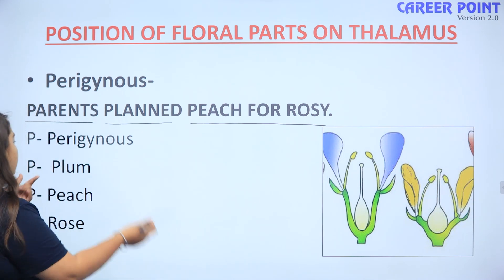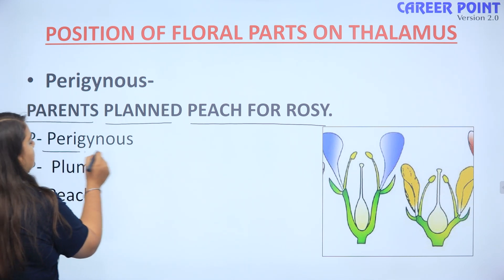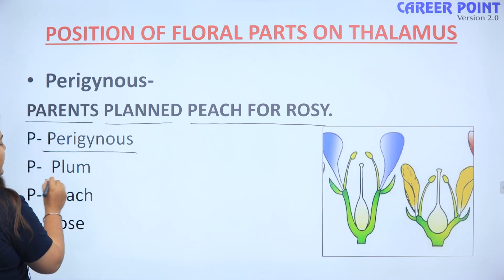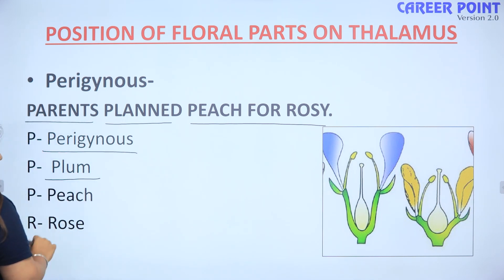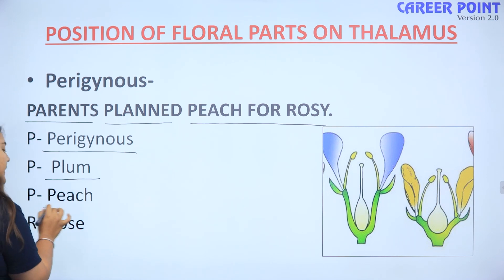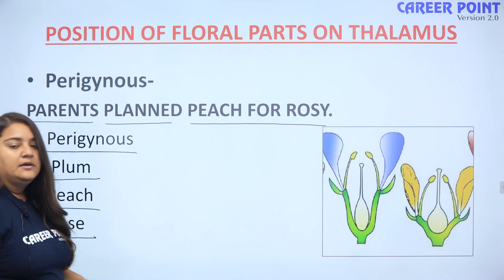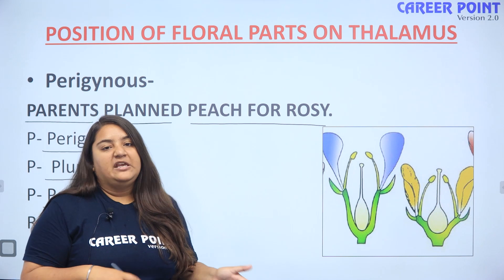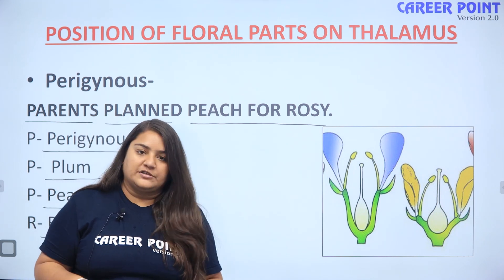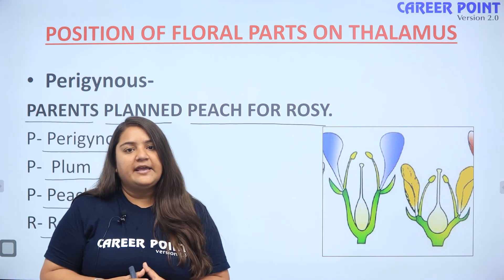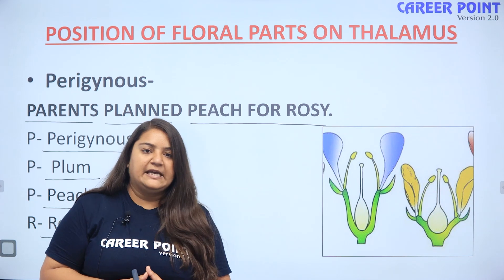P se kya ho gaya? Perigynous. Next P se plum. Us ke baad P se peach. And R se rose. So 'Parents plant peach for rosy' — simple, perigynous ki trick humey yad ho jayegi ab.